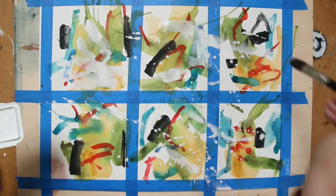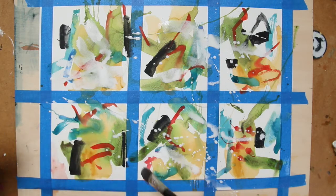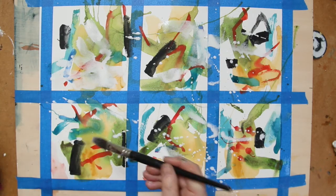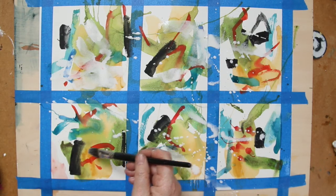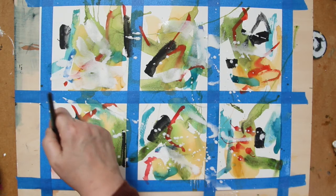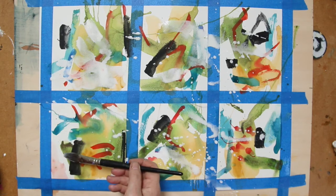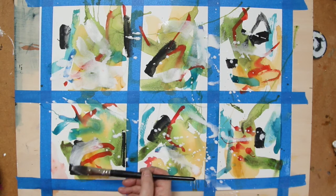And also I should let you know that the boards that I'm working on, I've raised slightly at the top with a thin book so that the board is on a little bit of a slant. That means that the paint is moving more.